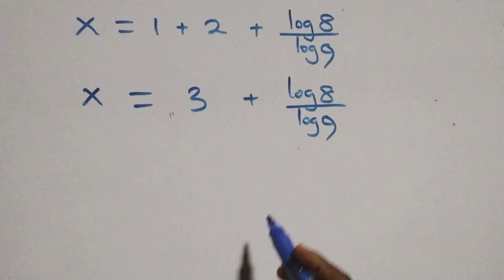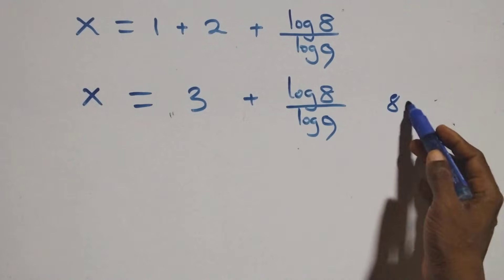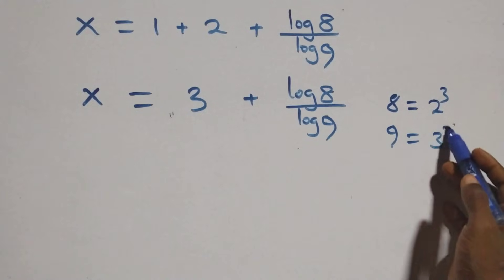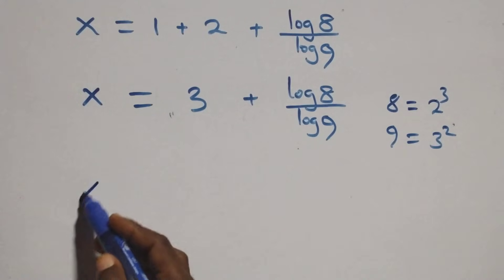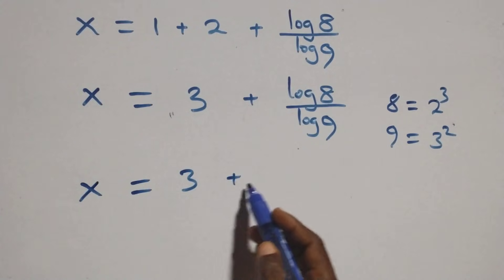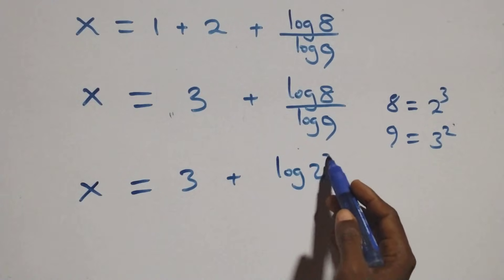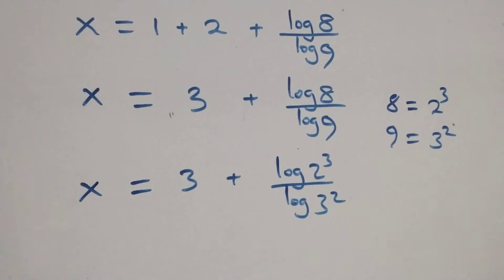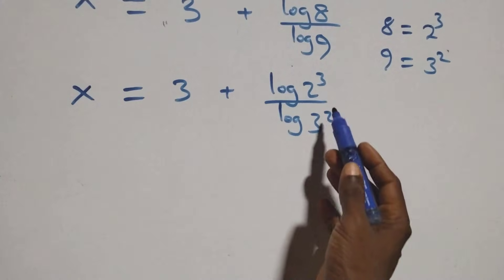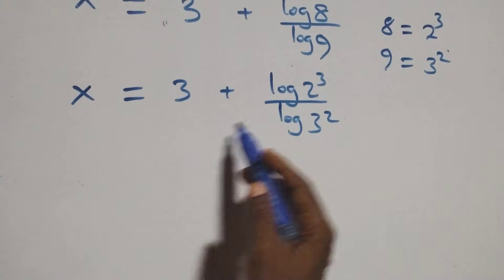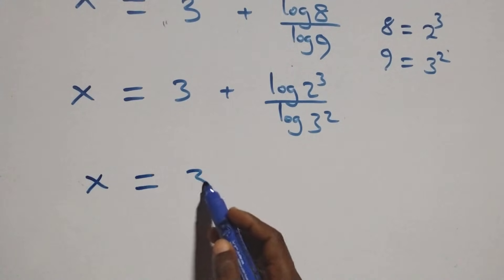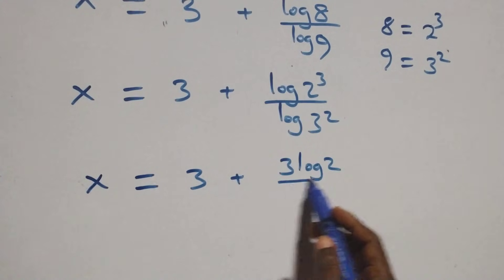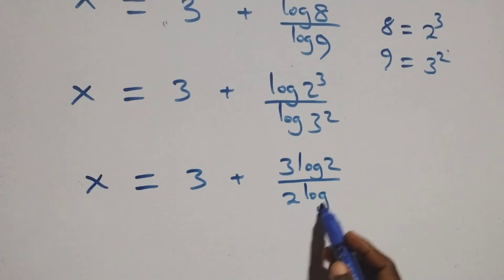Now we write 8 as 2 cubed (2 raised to power 3) and 9 as 3 squared. So x equals 3 plus log(2 raised to power 3) over log(3 squared). Applying the power rule, we have x equals 3 plus 3 log 2 over 2 log 3.